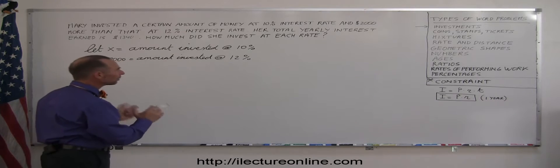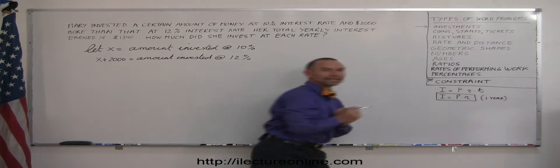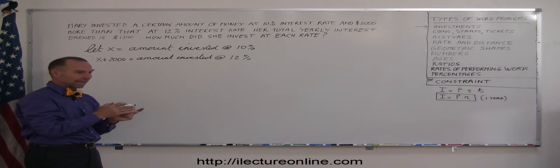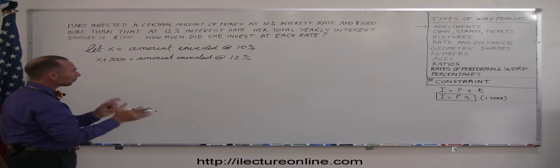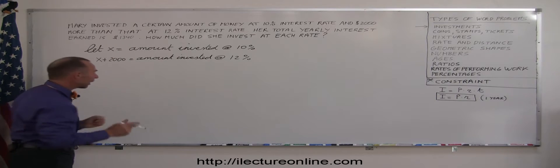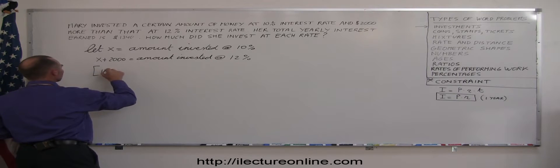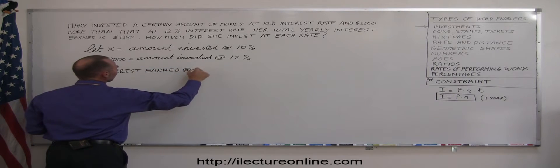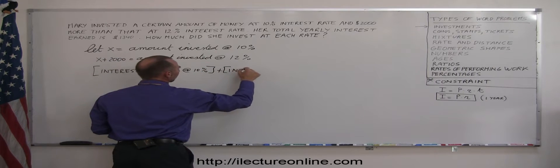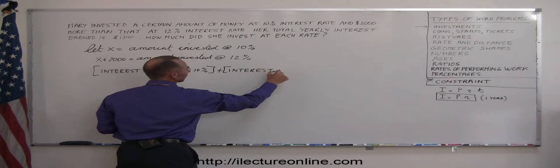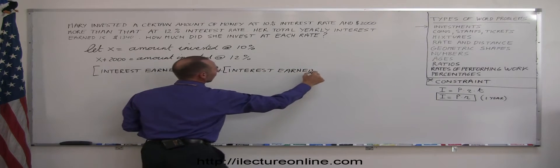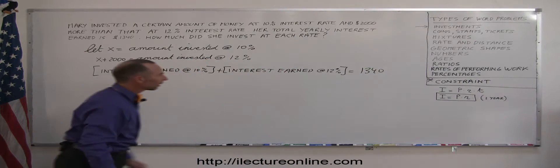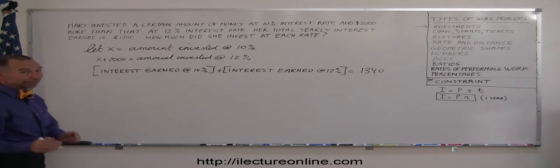Now we can go ahead and come up with an equation. There's some sort of constraint that will guide us. If she invests some money at 10% and some money at 12%, and all that she earns from both investments adds up to $1,340, we could write that the interest earned at 10% plus the interest earned at 12% should add up to $1,340. There's the equation that will help us solve this problem.